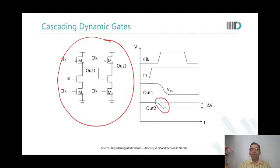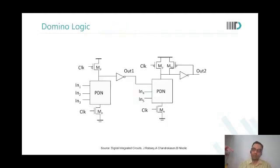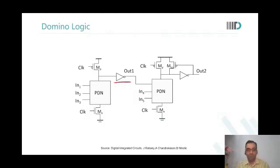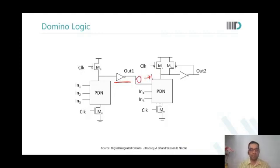There are other ways to cascade gates. One approach we already talked about is putting an inverter in between. The inverter will solve the problem because transitions are now always zero to one, and zero to one transitions are safe — no problems there.